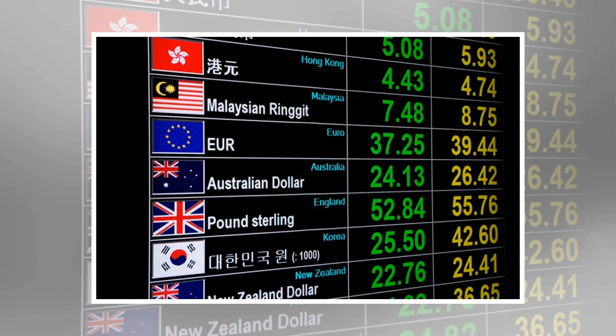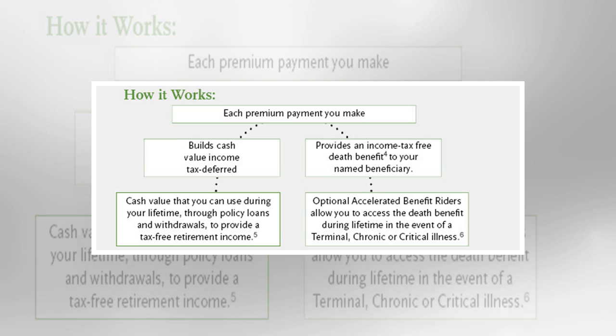Many people use assets in a retirement investment account or an annuity to generate income during retirement. But did you know you can use certain kinds of life insurance policies to do the same thing? Life insurance can generate tax-free income for retirement. Here are some important things you should consider.